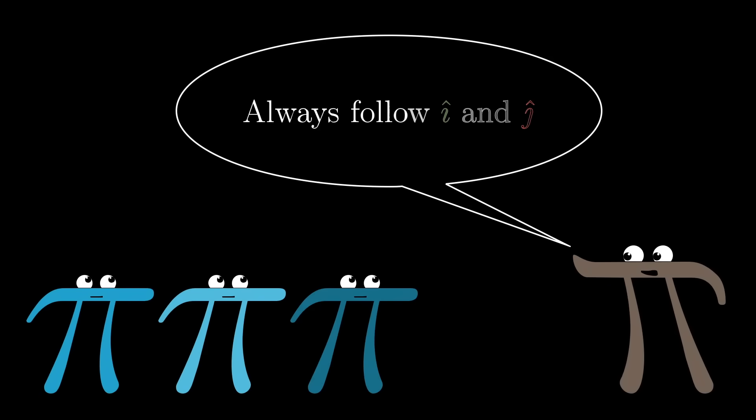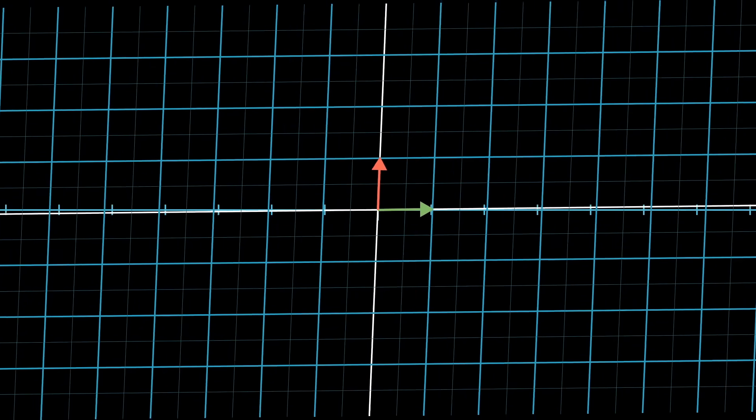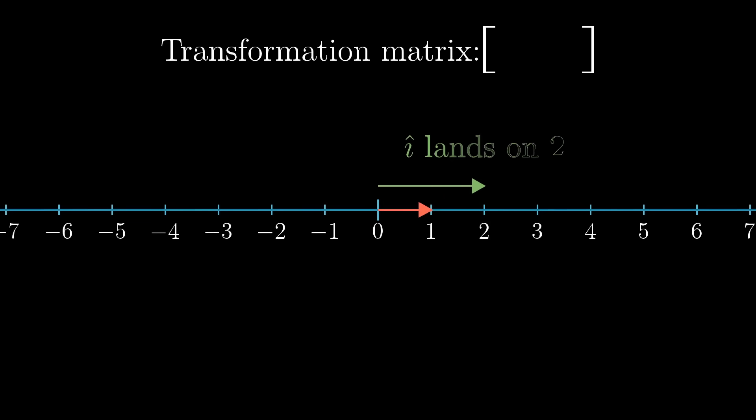As with the cases we've seen before, one of these linear transformations is completely determined by where it takes i-hat and j-hat. But this time, each one of those basis vectors just lands on a number. So when we record where they land as the columns of a matrix, each of those columns just has a single number. This is a 1 by 2 matrix.